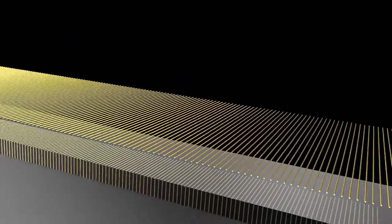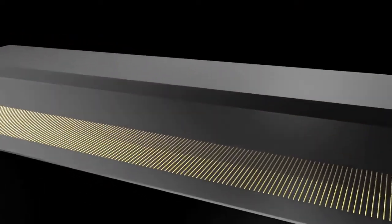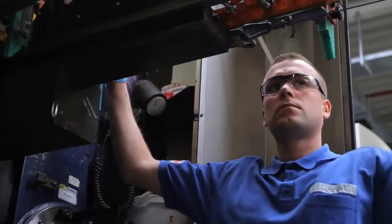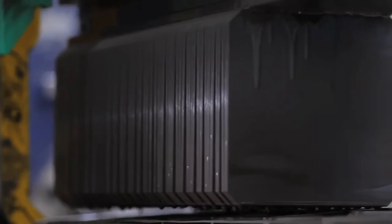The ingots are cut into millimeter-thin slices using a very fine wire saw. The individual slices are called wafers and form the basis of each solar cell.